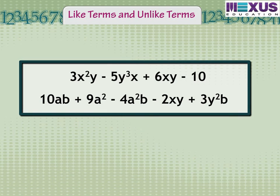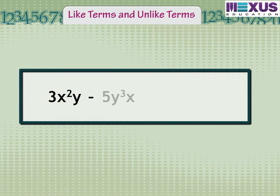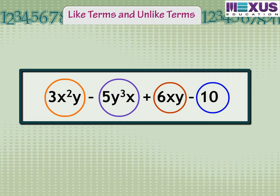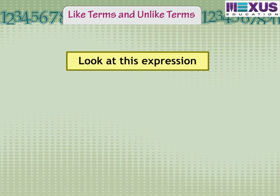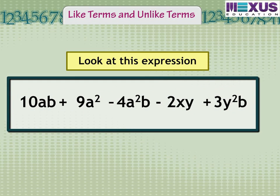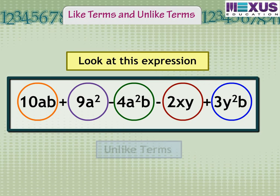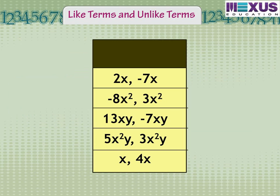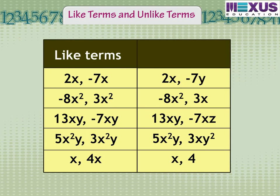On the contrary, unlike terms look different from each other. For example, in 3x squared y minus 5y cubed x plus 6xy minus 10, no terms look alike — all terms look different from each other, so we call them unlike terms. We can say that terms with the same variables are known as like terms, while terms with different variables are known as unlike terms.